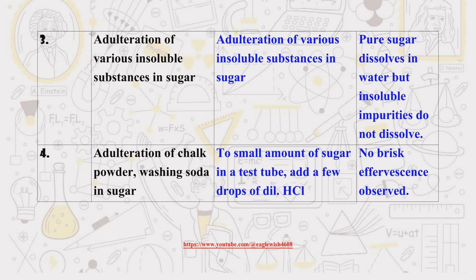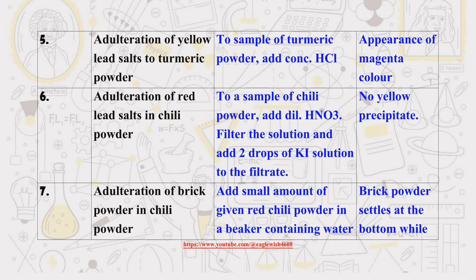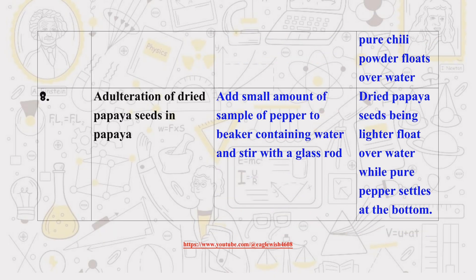Do you know? In India, food adulteration is primarily examined and regulated by the Food Safety and Standards Authority of India, FSSAI. The FSSAI is responsible for setting standards for food products, ensuring food safety, and regulating the manufacture, storage, distribution, and sale of food products to protect public health.